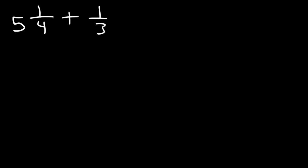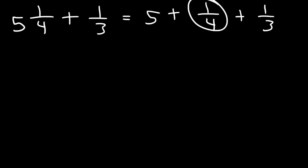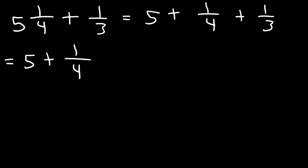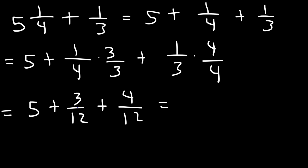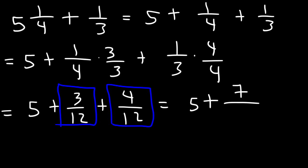Go ahead and try this problem: 5 and 1 fourth plus 1 over 3. We need to add these two fractions and get common denominators. 4 times 3 is 12, so we need a common denominator of 12. I'm going to multiply 1 over 4 by 3 over 3, and 1 over 3 by 4 over 4. 1 fourth times 3 over 3 is 3 over 12, and 1 third times 4 over 4 is 4 over 12. So now I can add: 3 over 12 plus 4 over 12 is 7 over 12. My final answer is 5 and 7 twelfths.